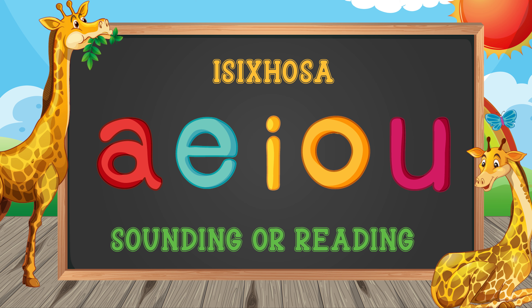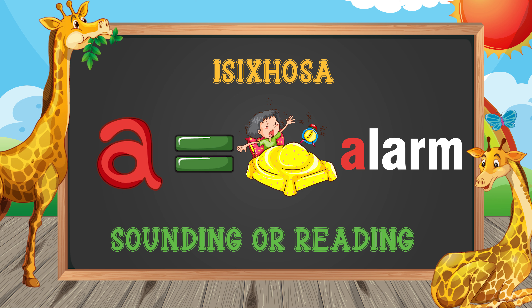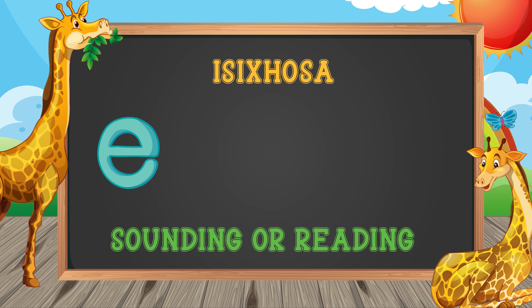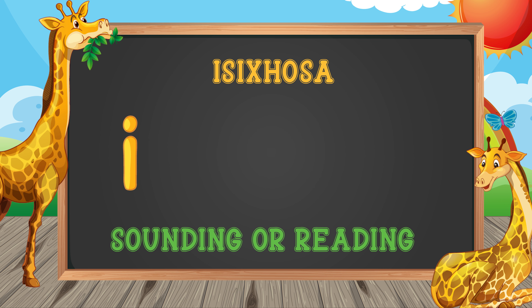We sound or read letter A as 'a', as in 'alam.' Letter E is sounded as 'a', as in 'elephant.' Letter I is sounded as 'e.'